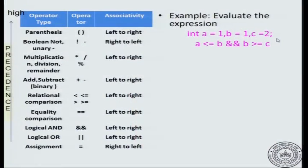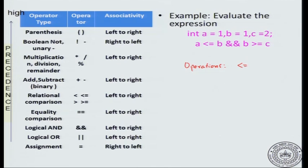Let us say that we have given an expression: a equal to 1, b equal to 1, c equal to 2, and then we have an expression a less than or equal to b, AND b greater than or equal to c. This is the expression that we want to see how it will be evaluated. The operations are: less than or equal to, then the logical AND operation, and the greater than or equal to symbol.